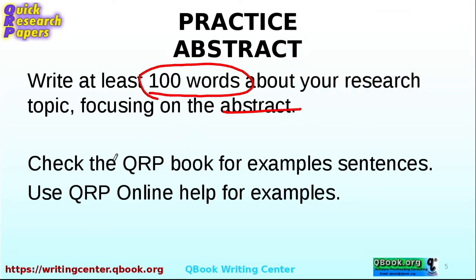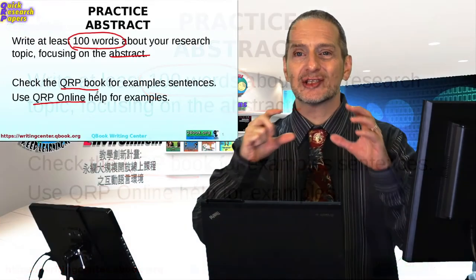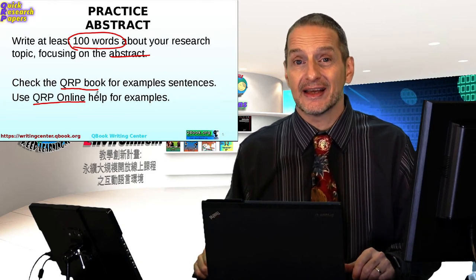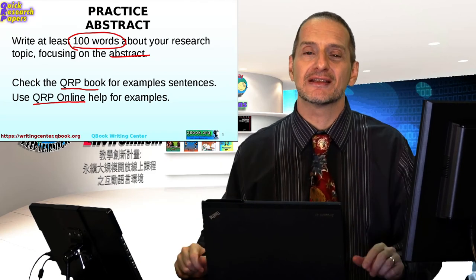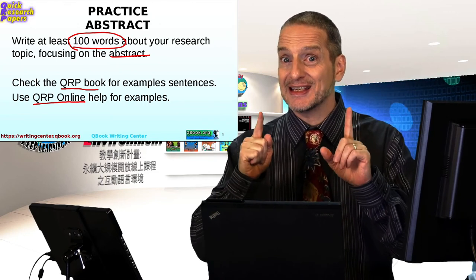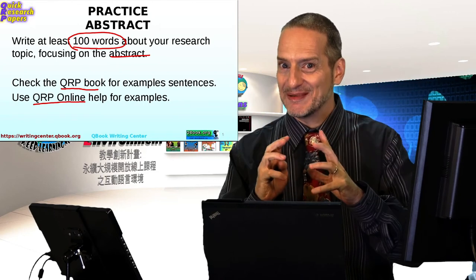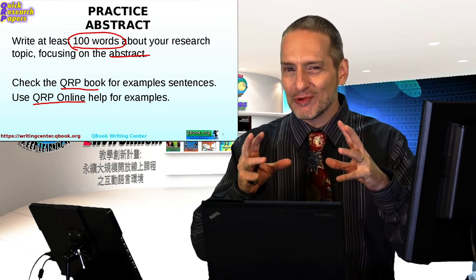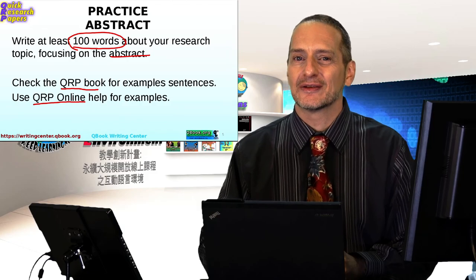So 100 words for the abstract. You can use the QRP ebook, which has example sentences. And don't forget the QRP online system has online help. That little yellow box that appears next to where you're writing, you can click on that and you're going to get online help with many example sentences. Abstract, the key point that's really hard is keep it short. Here 100 words is pretty short, but you really need to focus it down. Good luck.